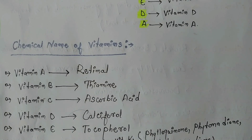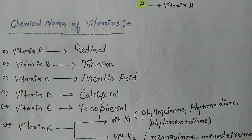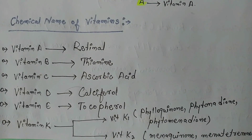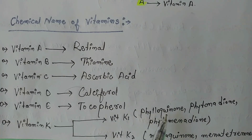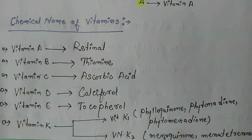Vitamin K has two types: Vitamin K1 and Vitamin K2. Vitamin K1 is phylloquinone (also called phytomenadione). Vitamin K2 is menaquinone (also called menatetrenone).